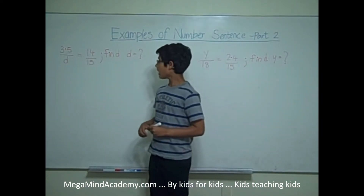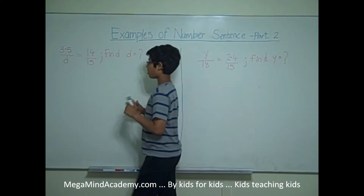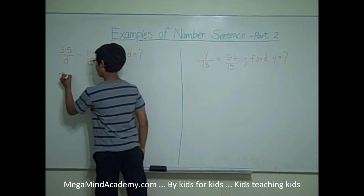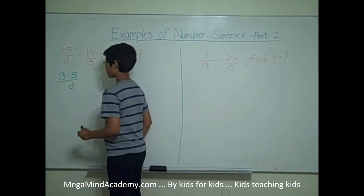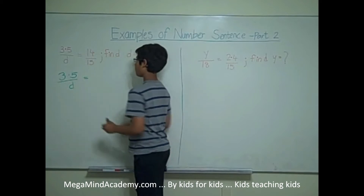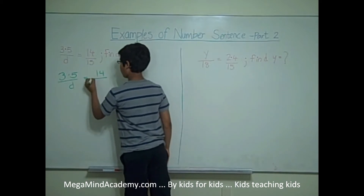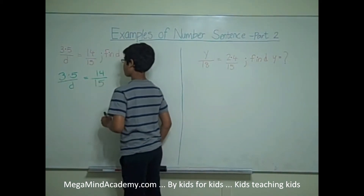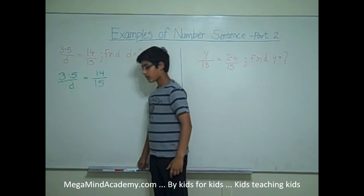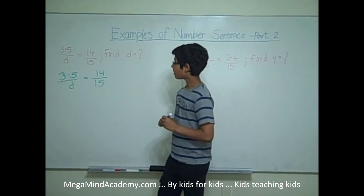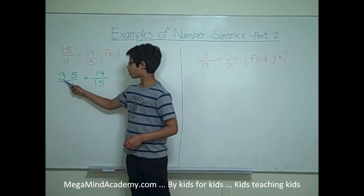Let's first rewrite this equation: 3.5 over d is equal to 14 over 15. The first step to solving this problem is using cross multiplication. That means we multiply d with 14, and 15 with 3.5.